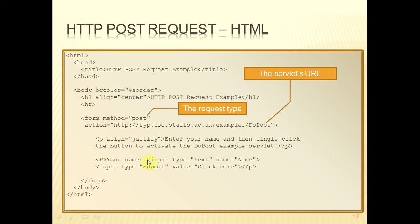With this example, we've got an extra input: your name. There's the text that tells the user what's to be input. The input has type equal to text, so it's a text box. The name of this text box is called 'Name' with a capital N. When this form is submitted, whatever the user has typed in the text box will be sent as a parameter on the request, and the form will only be submitted when the user clicks the submit button.